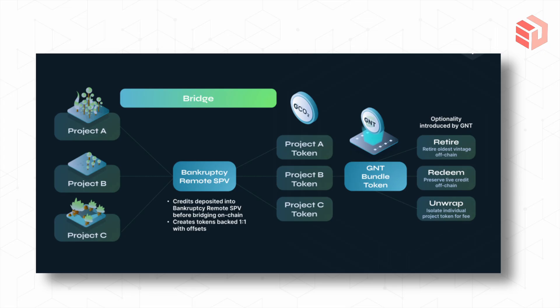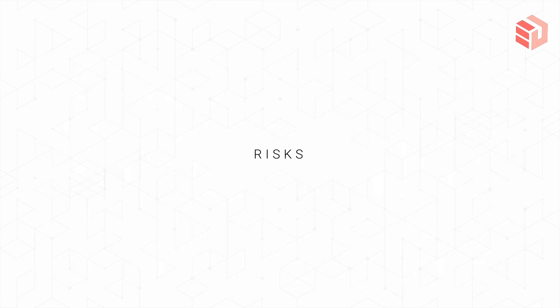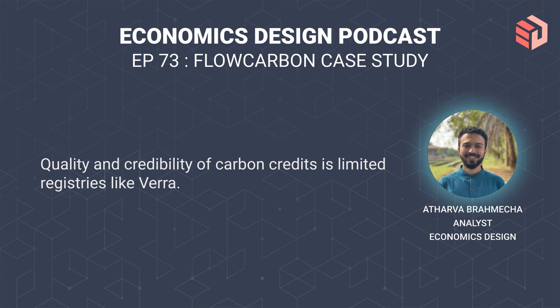The token bundling flow works as follows: GCO2 tokens of a particular type are bundled into the GNT token, and then you can engage in various options — retirement of these tokens, redemption of these tokens, or unbundling.